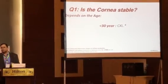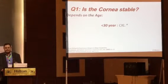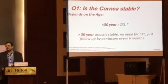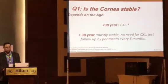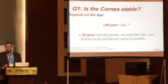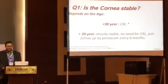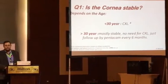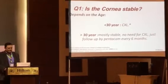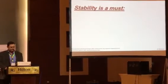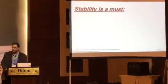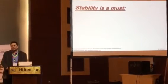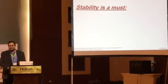We cannot do cataract surgery for a patient who has an unstable cornea. But if the patient is more than 30 years of age — which is the most common situation we face with cataract patients — there is a debate, because most of these patients have stable corneas and there is no need for cross-linking; just follow up by Pentacam every six months. For any ectatic cornea, before doing cataract surgery and a good IOL calculation, we have to have a stable cornea.